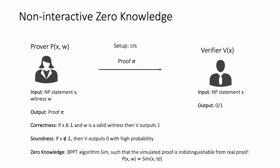The protocol has to satisfy a few properties. Firstly, it has to satisfy correctness: if x is in the language L and w is a valid witness, then the verifier outputs 1 — that is, if the prover is honest, the verifier always outputs 1. Next, it should satisfy soundness: if x is not in the language, the verifier outputs 0 with high probability. Finally, it should satisfy zero-knowledge: there exists a PPT algorithm called a simulator which computes a simulated proof given just the statement x and the trapdoor for the CRS, denoted td. This proof should be indistinguishable from an honestly generated proof.